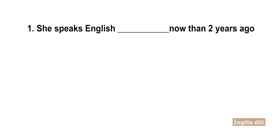Now, dear friends, let's do an exercise. Write the correct form of the adverbs. First sentence: 'She speaks English ___ now than two years ago.' The word is 'fluently.' The correct answer is 'more fluently.' She speaks English more fluently now than two years ago.